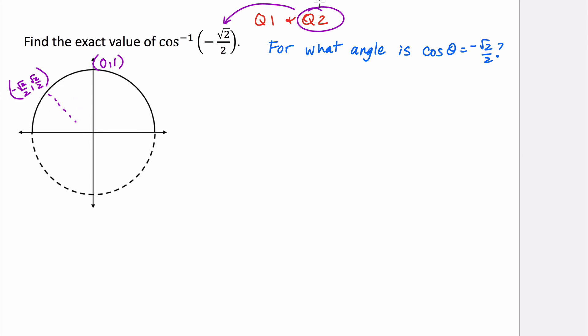And we can see that the x coordinate is negative rad 2 over 2, and the cosine represents the x. So this angle here, which is 3 pi over 4, is going to be the value where this is true. So the cosine of theta is equal to negative rad 2 over 2,